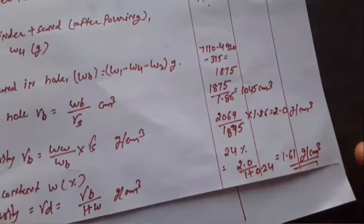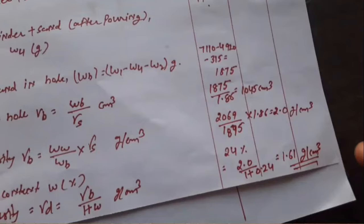Repeat all the steps 2 more times and record the values in the observation sheet. Then take the average of all 3 values — that will be the final value of your dry density. That's how you perform the sand replacement method to determine the dry density of soil. Thank you.